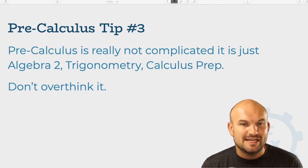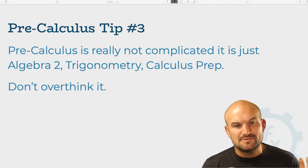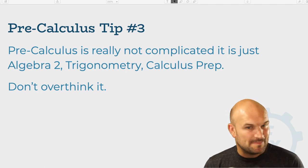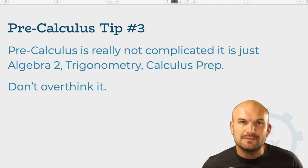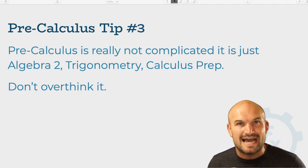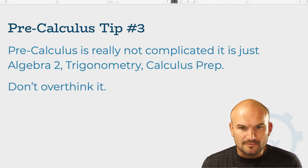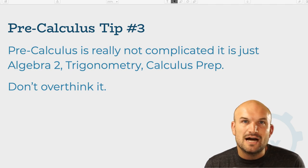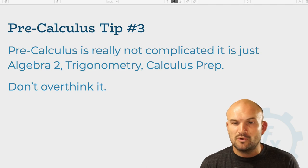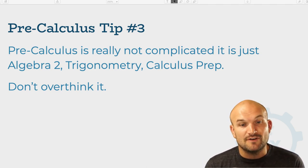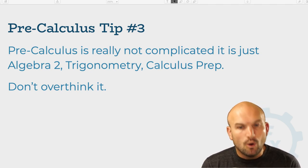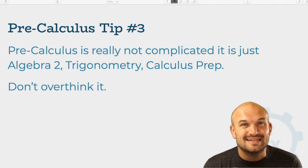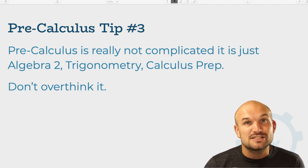Don't overthink it. Pre-calculus is really just a combination of algebra 2, trigonometry, and some calculus topics. With algebra 2, we expand on what you've already learned, and sometimes students forgot what they learned, so that's why it becomes difficult. Trigonometry is obviously a new concept for many students — we covered a little bit in geometry, but we go much more advanced. When you just break things down, they're fairly basic concepts that we expand upon. If you come into issues understanding pre-calculus, just try to slow down, really understand where you're having trouble, and don't overthink it.